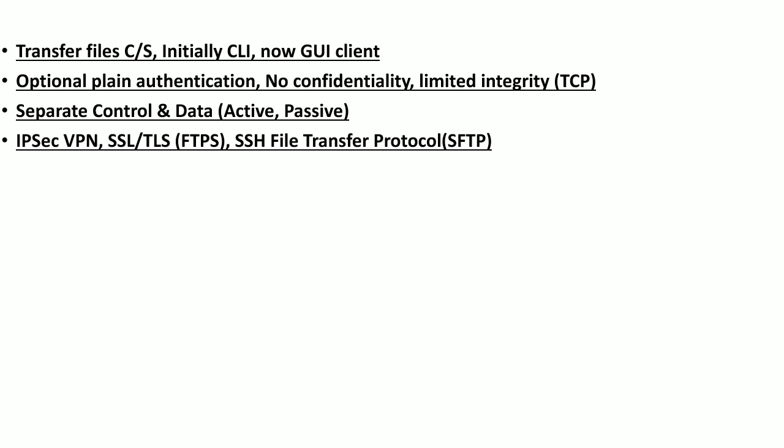Since there is no confidentiality or integrity in the default FTP protocol, security can be provided by IPSec, which operates at layer 3 and establishes an encrypted VPN so all traffic is tunneled through it. Additionally, FTPS (FTP over SSL/TLS), where TLS/SSL operates at layer 4, can be used to provide confidentiality. SSH FTP can also be used, where the SSH protocol operates at layer 7 and encrypts the FTP traffic.